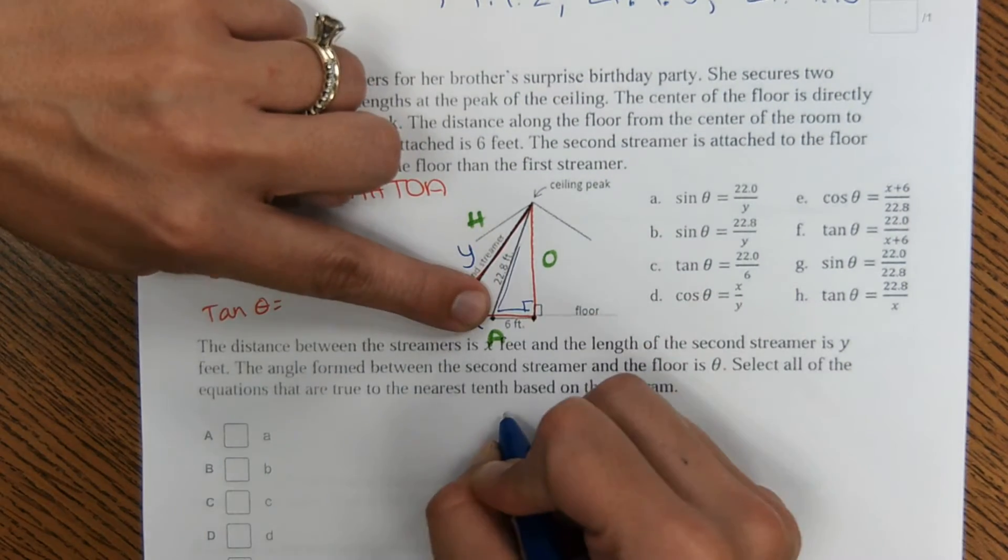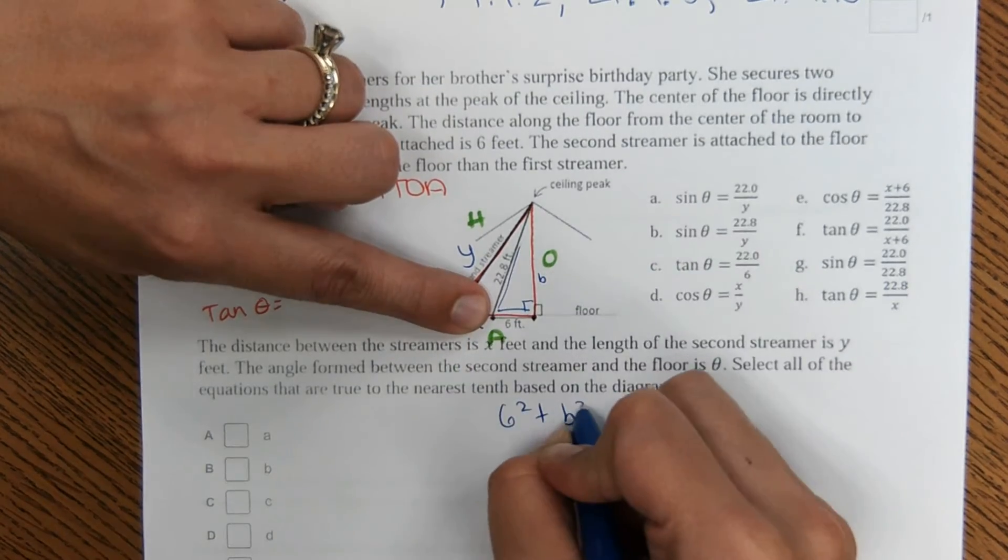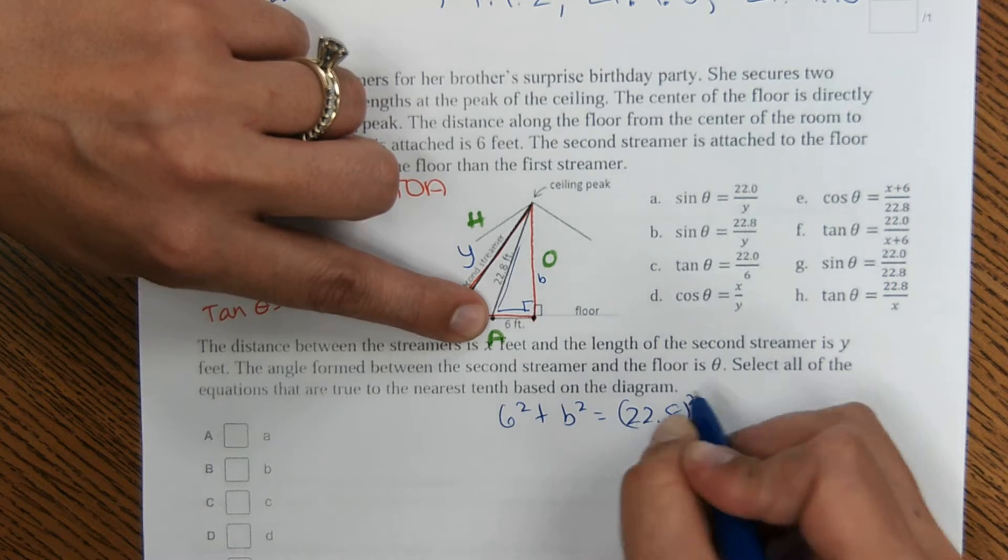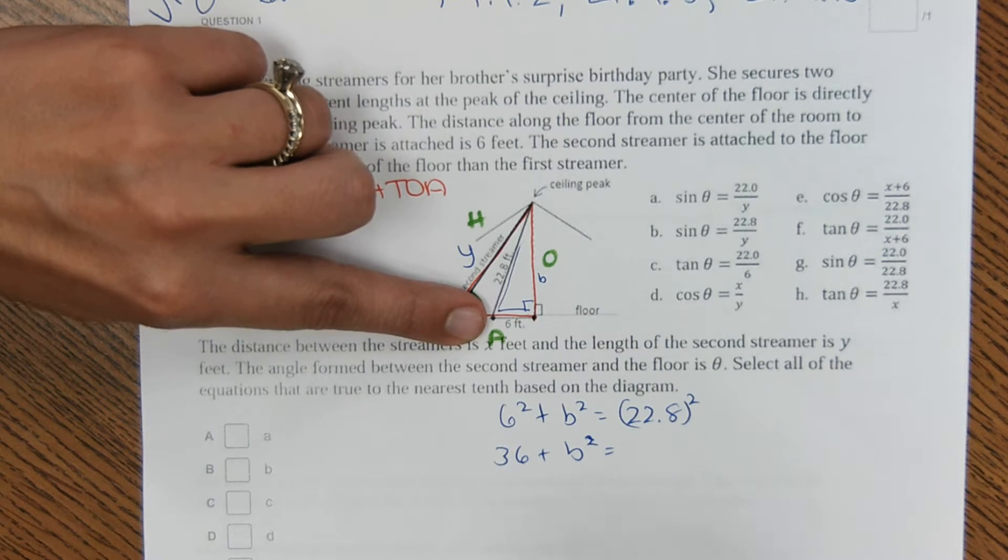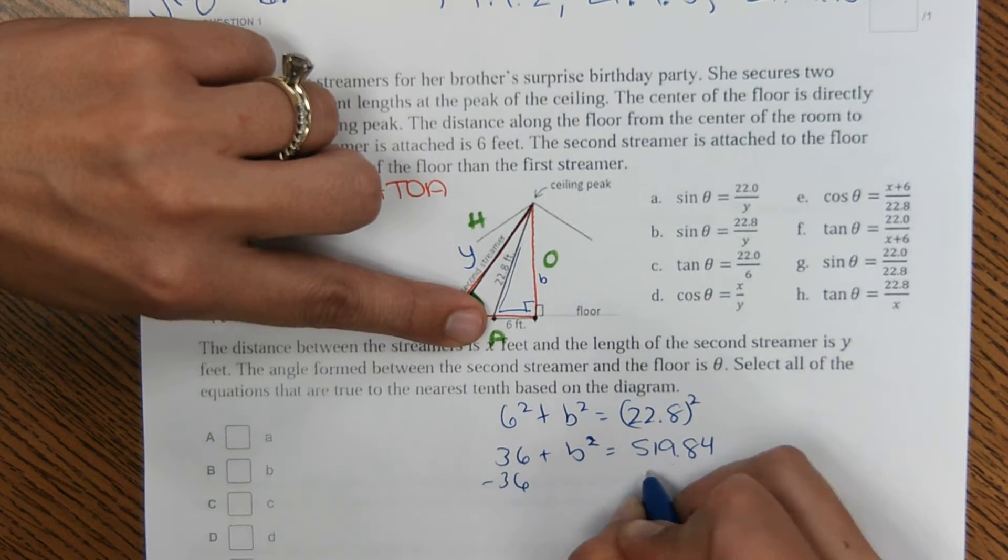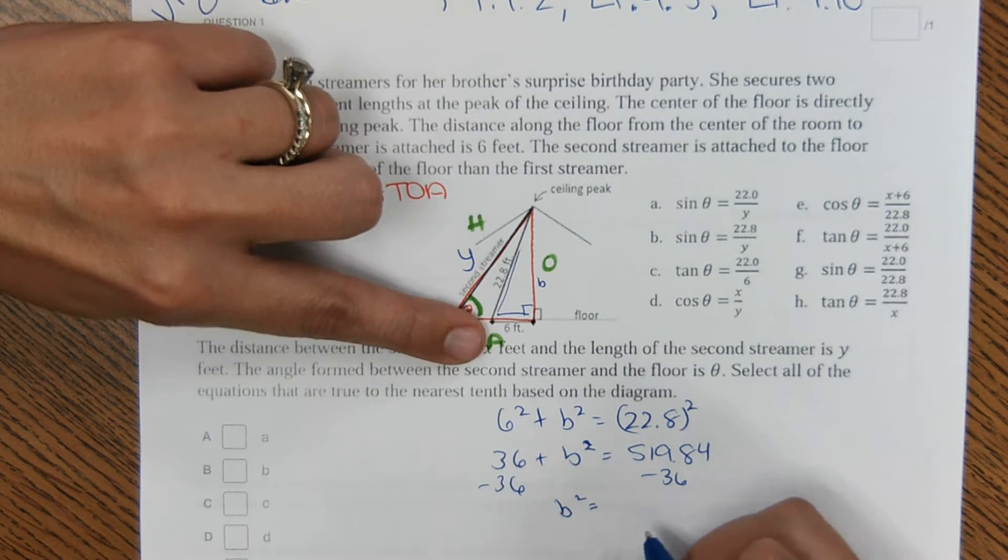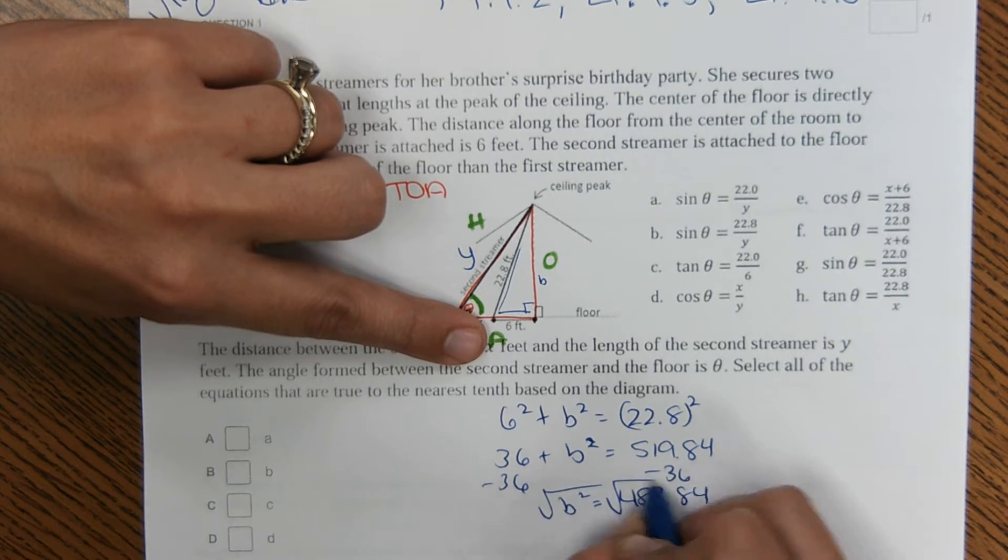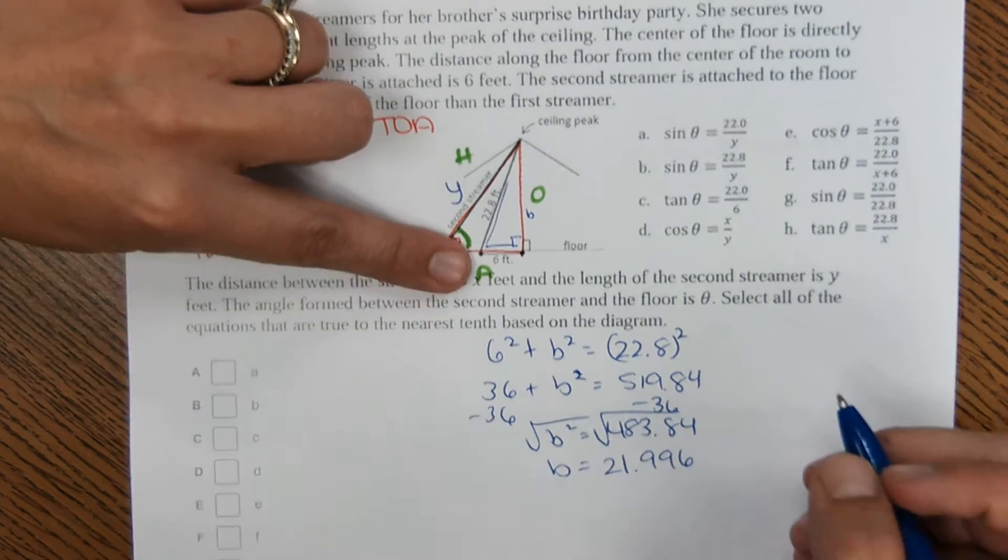So let's see, we have 6 squared plus this would be like b squared in our Pythagorean theorem, and then c squared 22.8 squared. We go ahead and solve this. Take the square root of both sides, and b comes out to a number that looks like this, 21.996.